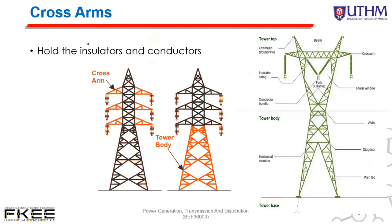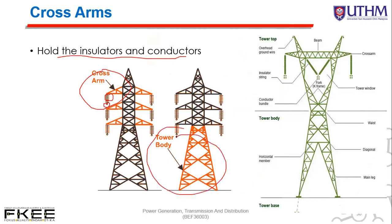The cross arm holds the insulator and conductor. On the cross arm there are both insulators and conductors. Looking at the figure: this part is the tower body, this is the cross arm, this is the insulator, and this is the conductor.